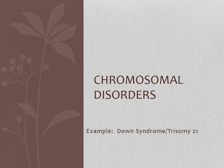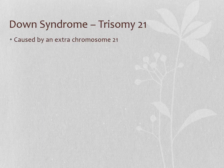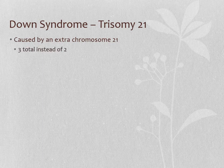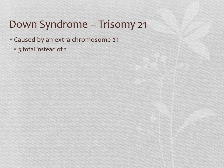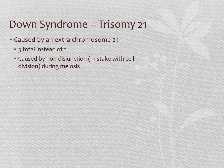Next we'll discuss genetic and chromosomal disorders, focusing on Down syndrome, also known as trisomy 21 — the most common chromosomal disorder. 'Tri' means three, and '-somy' means body, so trisomy means having three of something instead of two. In Down syndrome, there is an extra chromosome 21. Instead of one from a sperm and one from an egg, they end up with three. In human genetics, having extra chromosomal material causes things to go haywire.